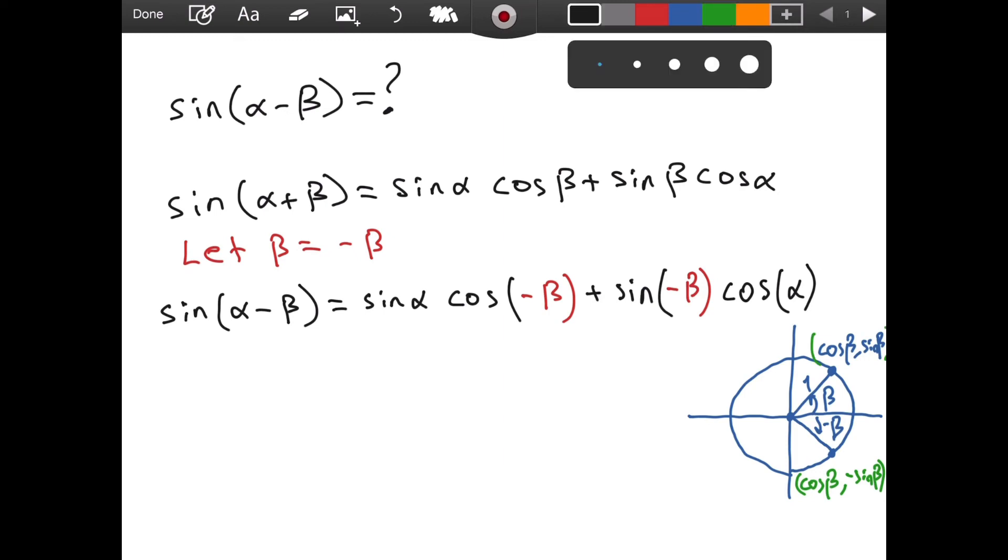And well, then we can substitute this, can't we? We have sin(α) times, instead of cos(-β), as we can see from the diagram, we can simply write cos(β). And then we have a plus sign instead of sin(-β), as we can see from the picture, we will have -sin(β). The value stays the same, but it was positive. Now it is negative.